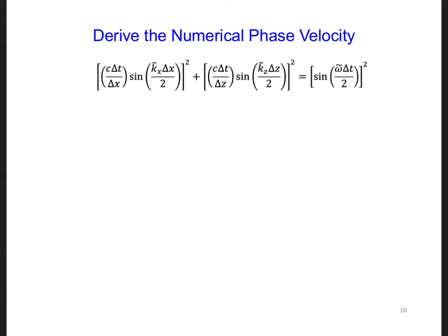Going back to the equation that we started with for 2D, we previously solved for the numerical angular frequency. Now let's assume we will run our code in the stable regime, which means omega tilde will be a real number.